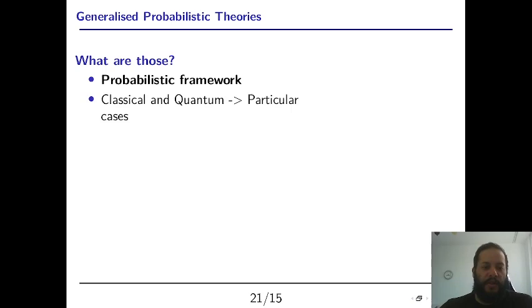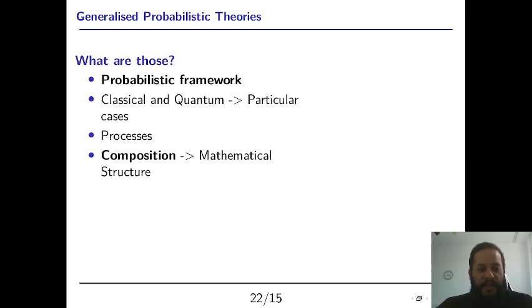And what are those? They are theories that have the structure of probabilistic framework and they have classical and quantum theories as particular cases. These theories have as primitive processes and the notion of composition. For example, one process can happen after the other or at the same time. This notion provides us with a mathematical structure already, even if it's so simple.